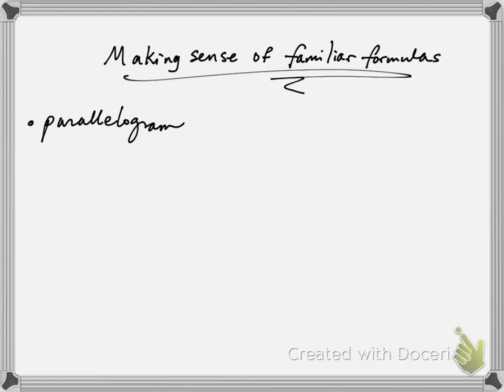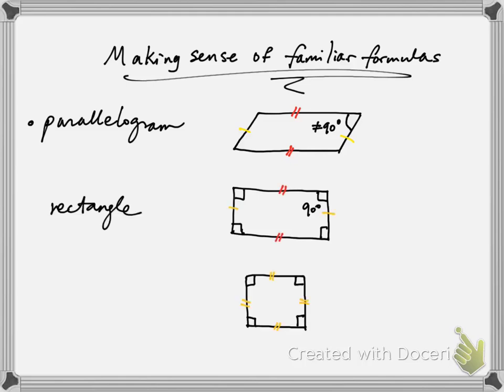A parallelogram is a shape that has two sets of parallel lines. The adjoining angles do not have to be a right angle, or 90 degrees. But if all the adjoining angles are 90 degrees, we get a rectangle. That is why a rectangle is just a special case for a parallelogram. And the lengths of the sides do not have to be the same as well. But if all sides are the same, we get a square. And that is why a square is a special case of a rectangle, which is also a special case of a parallelogram.